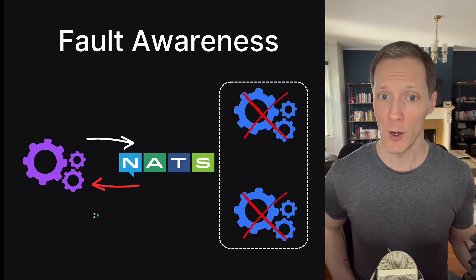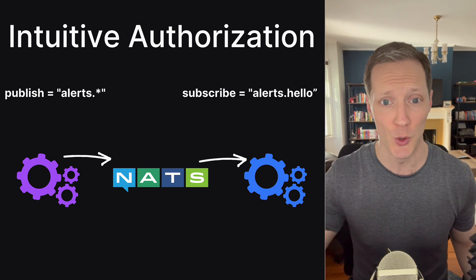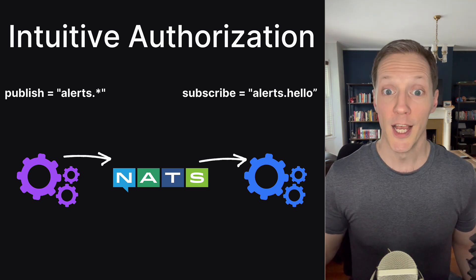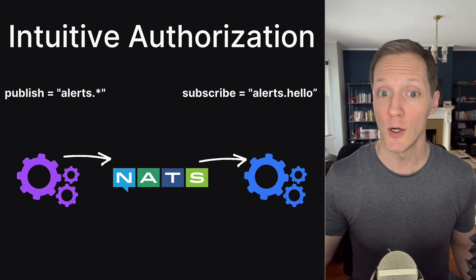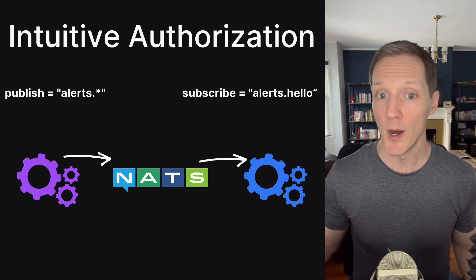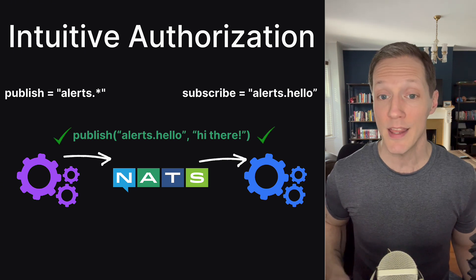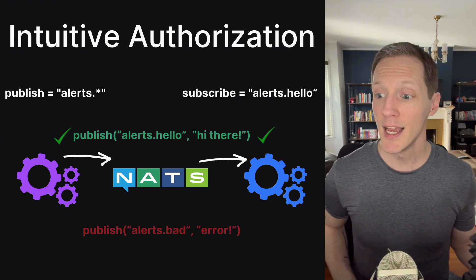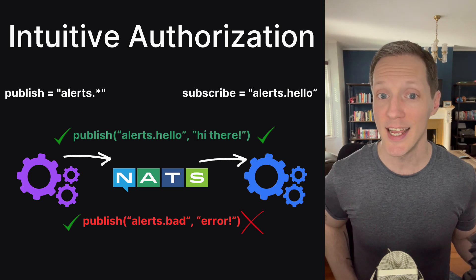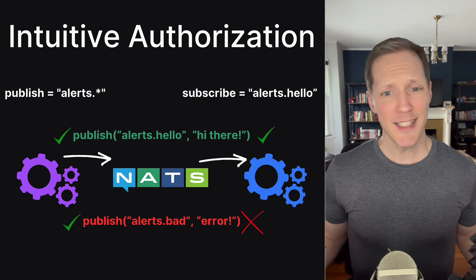You might be wondering, what about additional things we need, like authorization? Authorization is built in and it's super intuitive. You don't need ACLs or complex third-party authentication. On the left, we can have a service authorized to publish to alerts.wildcard — meaning alerts.anything. On the right, a service can only subscribe to alerts.hello. So when we send a message to alerts.hello, because both sides are authorized, that message goes through. But if we send a message to alerts.bad or anything that isn't hello, the left side is authorized but the right side isn't — so that message won't go through. It's so intuitive you wonder why it hasn't always been like this.